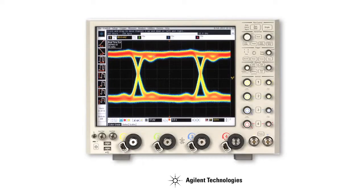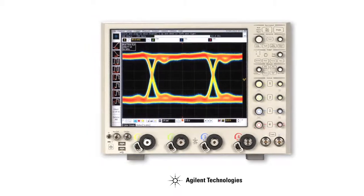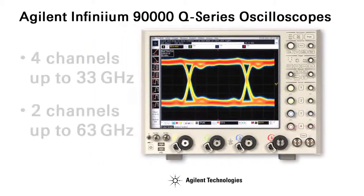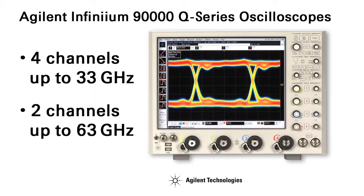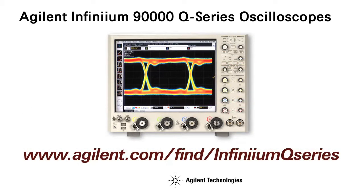Agilent's new Infinium Q-Series oscilloscopes offer the lowest noise and jitter measurement floor of any real-time scope available today, guaranteeing you the best possible margins in your eye diagram measurements. For more information, visit us at www.agilent.com/find/InfiniumQ-Series.